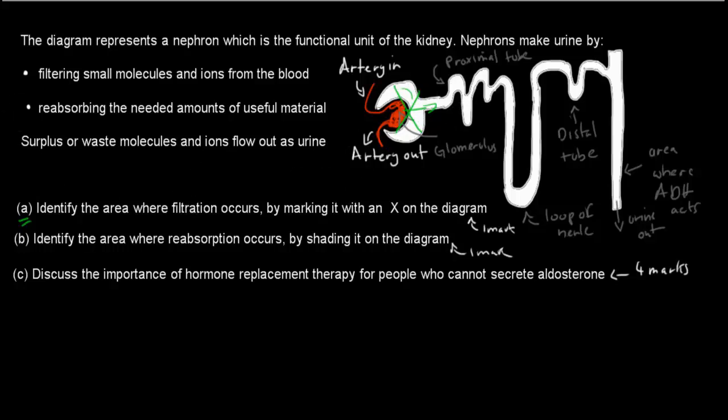Next part was: identify the area where reabsorption occurs by shading it on the diagram. Reabsorption actually occurs pretty much throughout the nephron. So it occurs in the proximal tube, I'm shading that now. It also occurs in Loop of Henle. It occurs in distal tube as well.